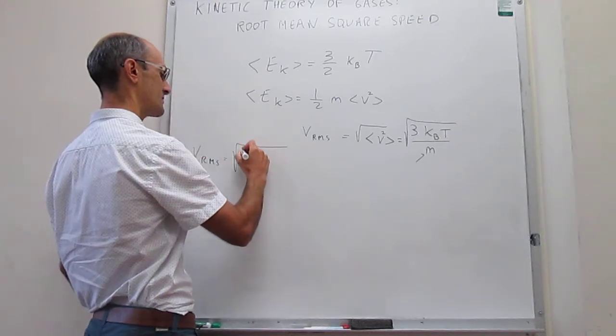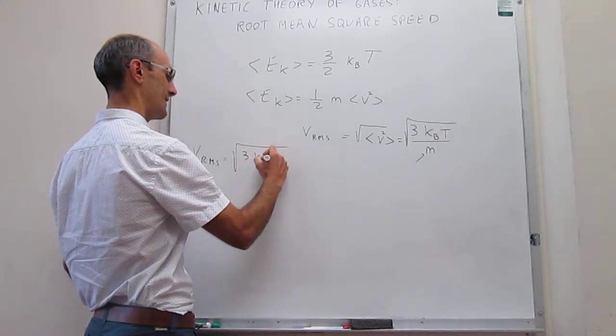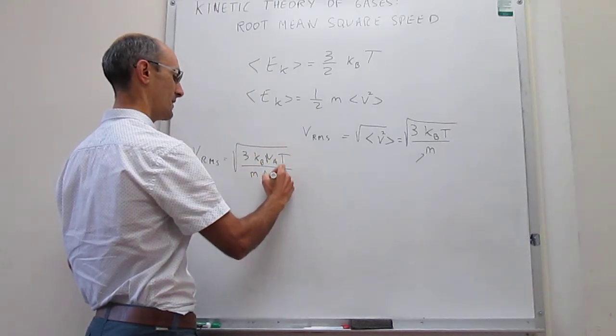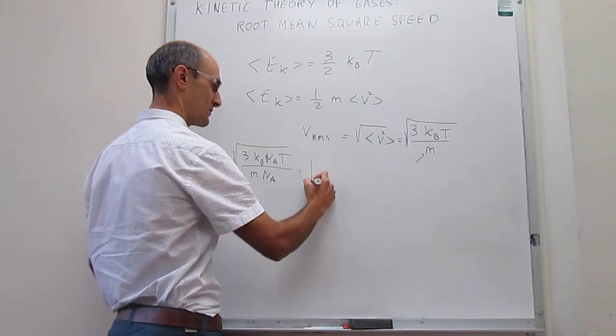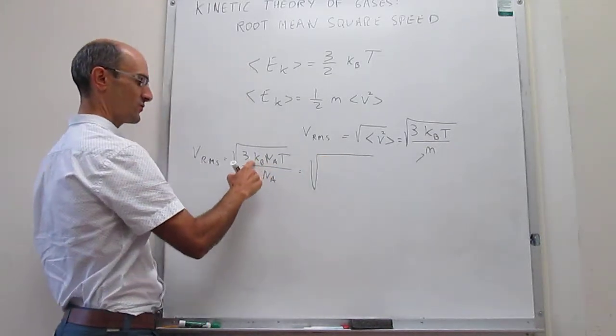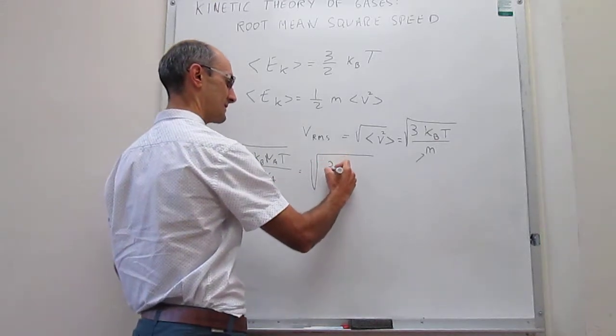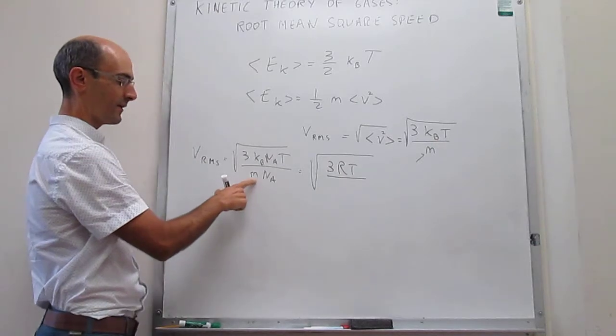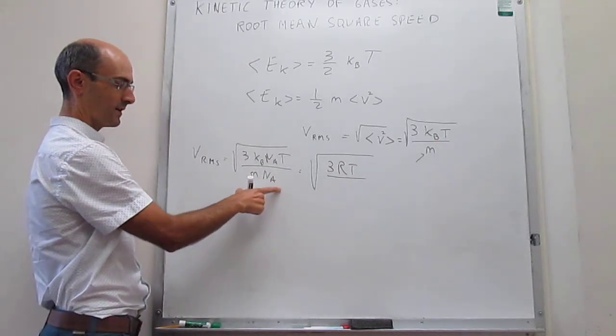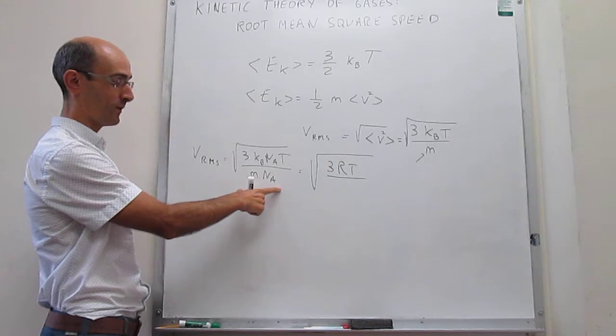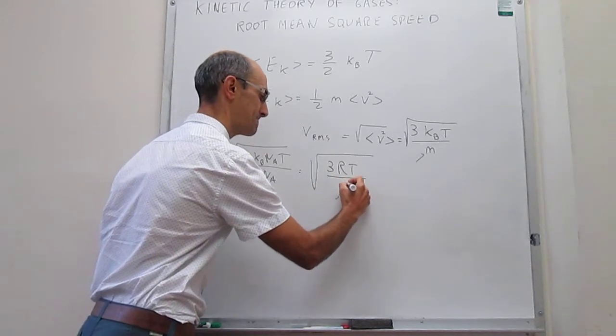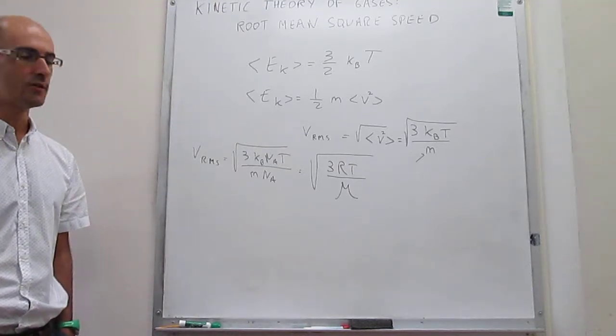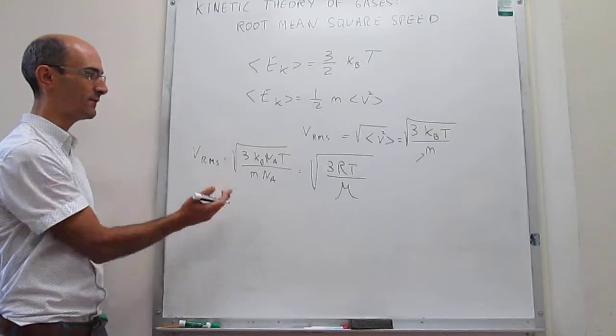V_RMS: if we multiply by Avogadro's number, 3 K sub B N sub A T, and divide by mass over N sub A. Notice that we're changing this expression to the following: K sub B times Avogadro's number, that happens to be the gas constant, 3RT. And in the denominator, we have the mass of one particle multiplied by the number of particles in one mole, that is simply the molar mass. So that is our easy-to-use expression to calculate the root mean square speed for a particular gas.